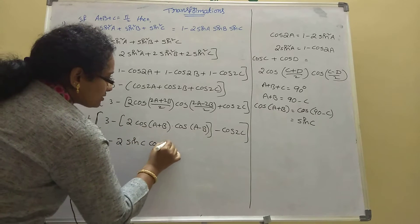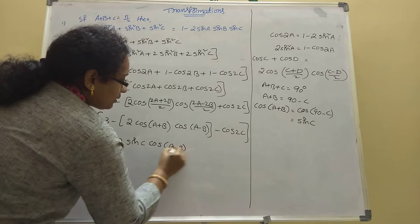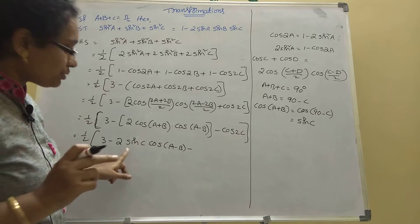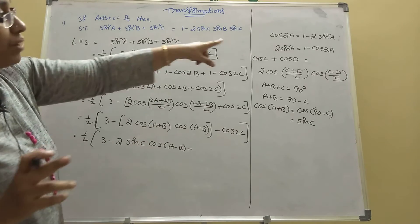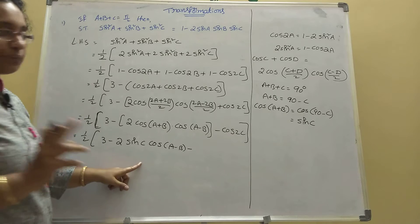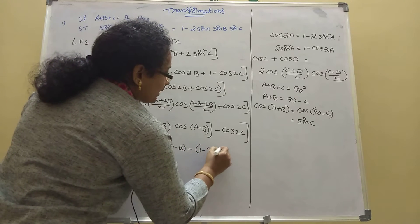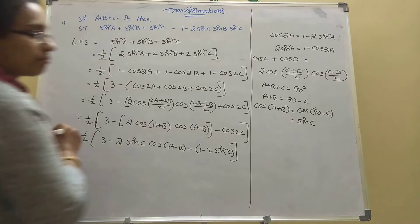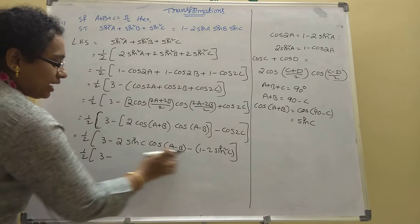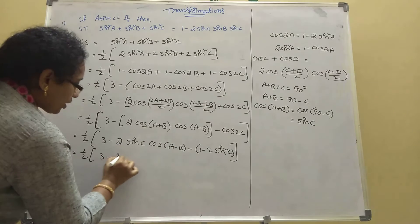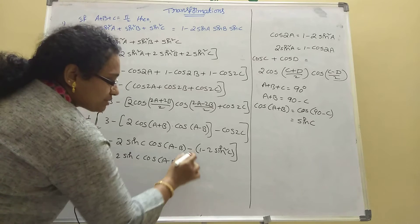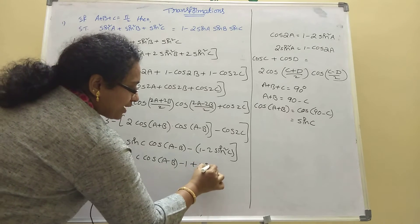Minus cos 2C. Now convert cos 2C in terms of sin: it is 1 minus 2 sin square C. So we have 1 by 2 times [3 minus 2 sin C cos(A minus B) minus (1 minus 2 sin square C)], which gives 1 by 2 times [3 minus 2 sin C cos(A-B) minus 1 plus 2 sin square C].